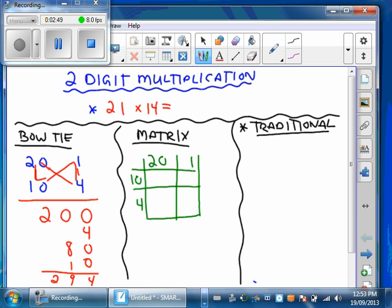And with this matrix, what we do is we want to fill in these squares. So, we just come to the middle and we meet. So, it's 20 times 10 is 200, 20 times 4 is 80. And then we do it over here. 1 times 10 is 10, and 1 times 4 is 4.